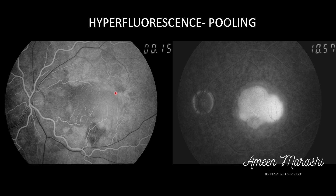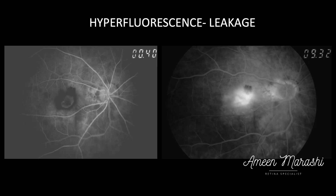In the early phase, we have an early hyperfluorescence that increases in intensity without increasing in size. This hyperfluorescence is at the sub-RPE level, while this hyperfluorescence is at the subretinal level.